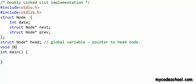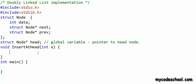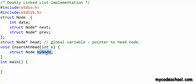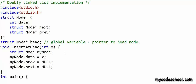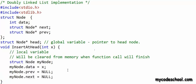The first function I want to write is insertAtHead, which takes an integer as argument. The first thing we want to do is create a node. We can declare a node like this: struct node, then give it an identifier. But the problem is that when creating a node this way, we are creating it as a local variable, and it will be cleared from memory when the function call finishes.